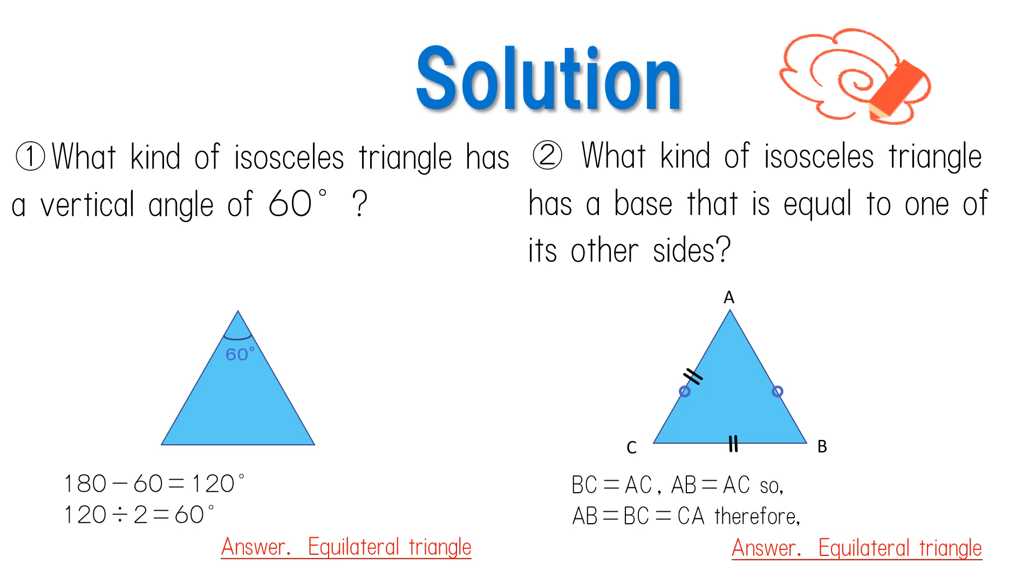For number two, an isosceles triangle whose base is equal to the length of one other side is an equilateral triangle. In triangle ABC, since BC equals AC and AB equals AC, AB equals BC which equals CA. Were you able to answer both problems correctly?